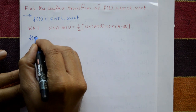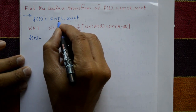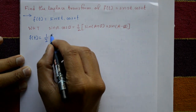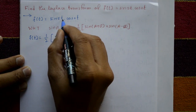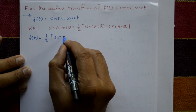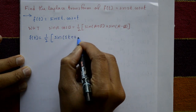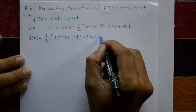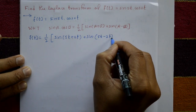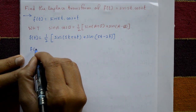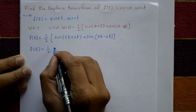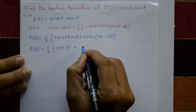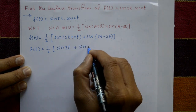Applying the formula, f(t) = (1/2)[sin(a+b) + sin(a-b)] = (1/2)[sin(5t+2t) + sin(5t-2t)] = (1/2)[sin(7t) + sin(3t)].